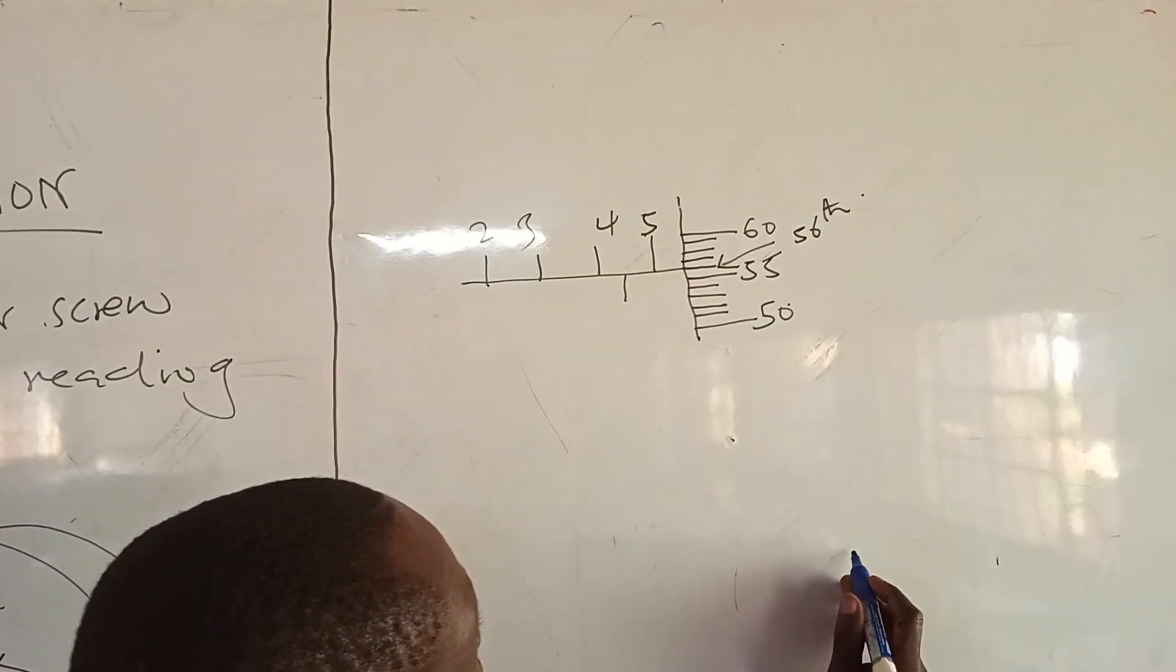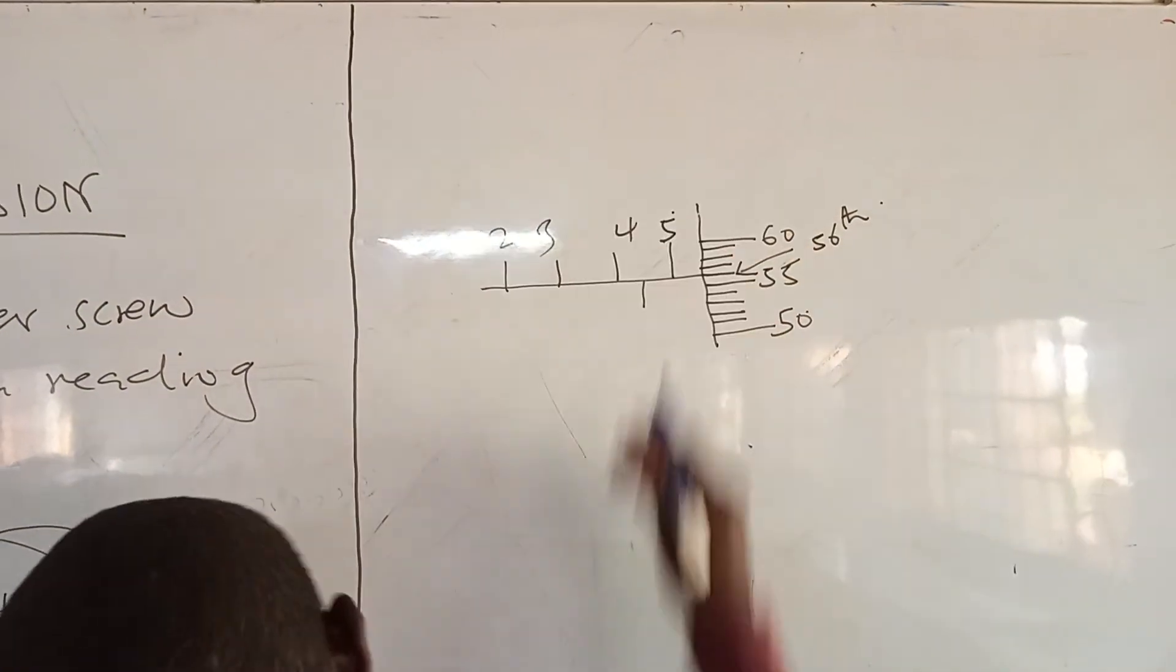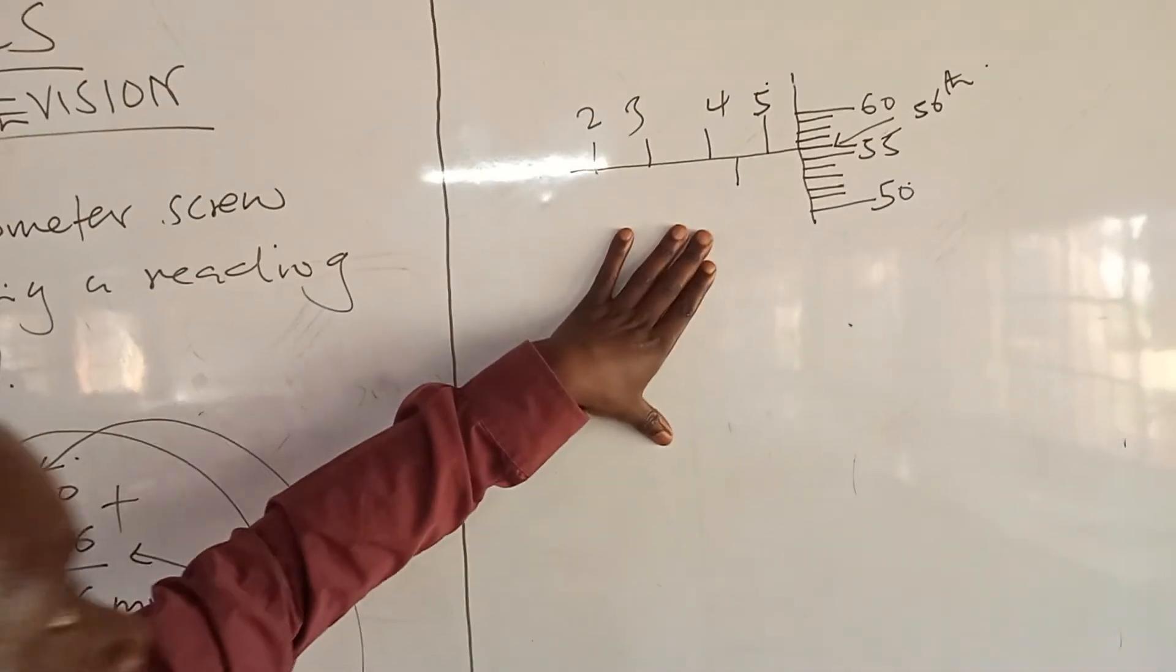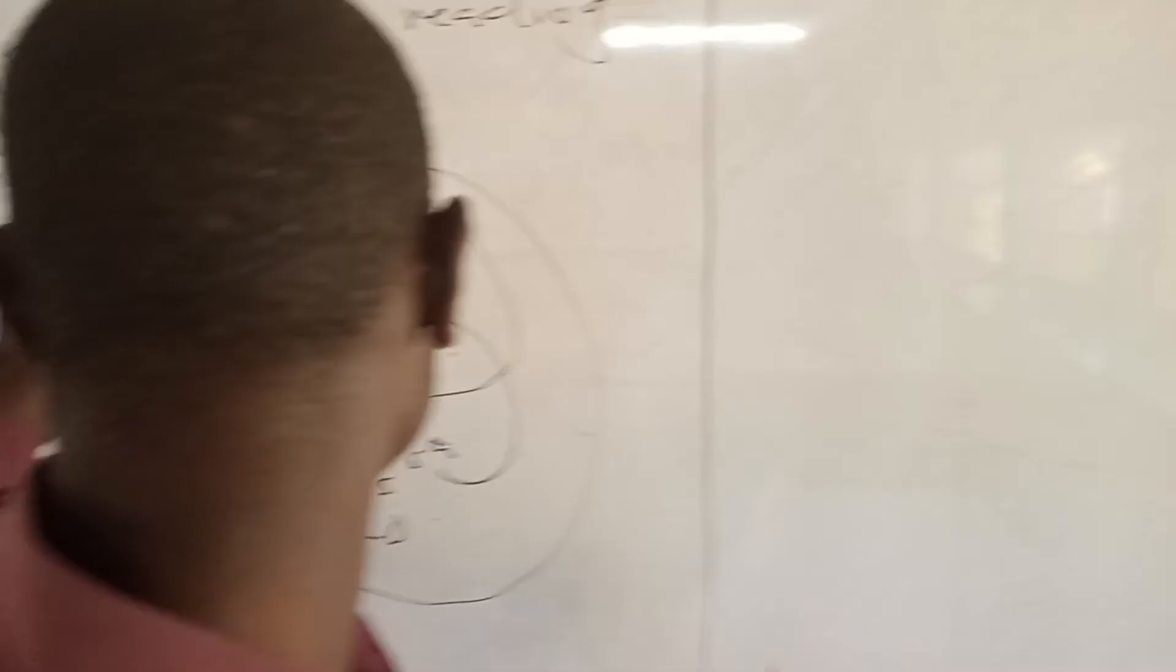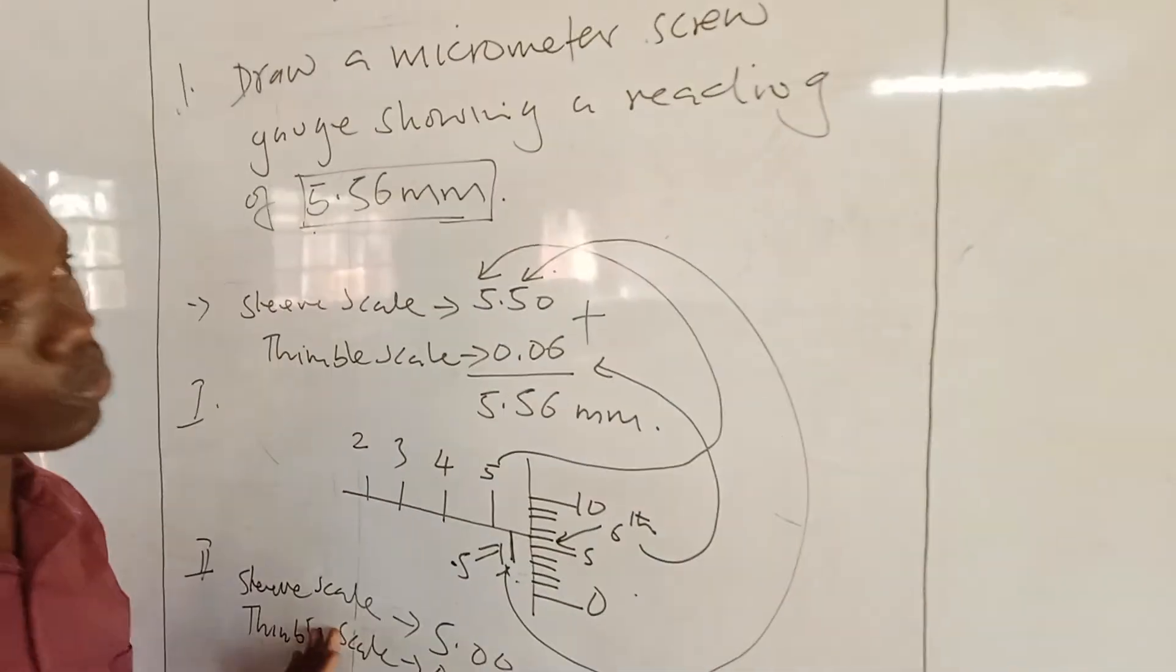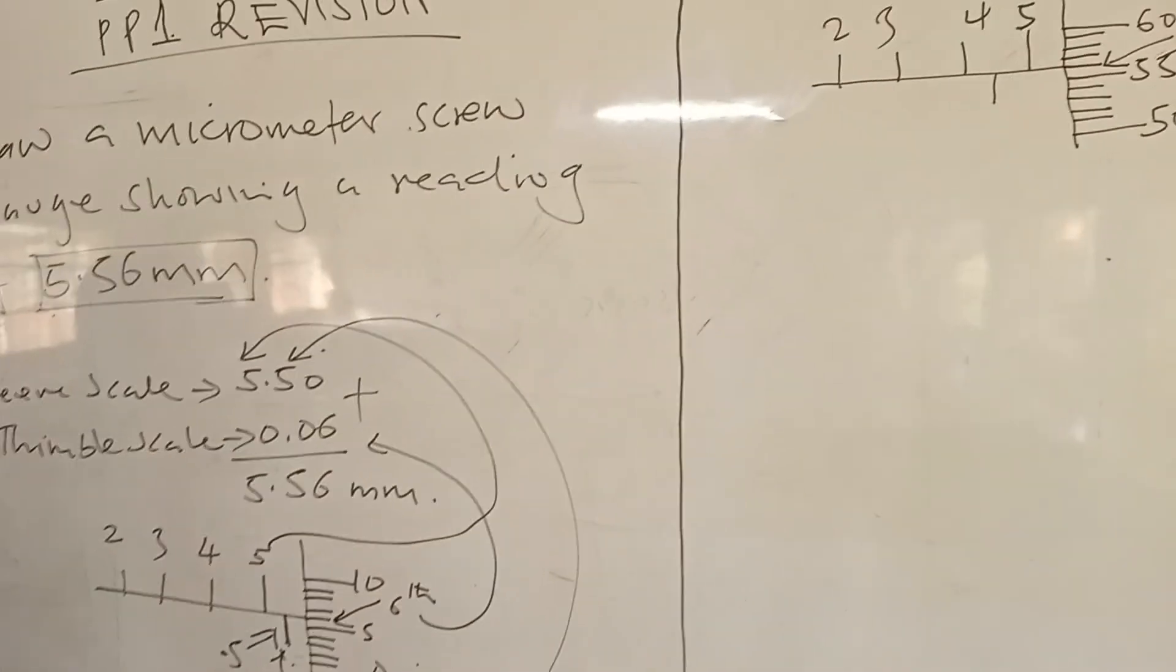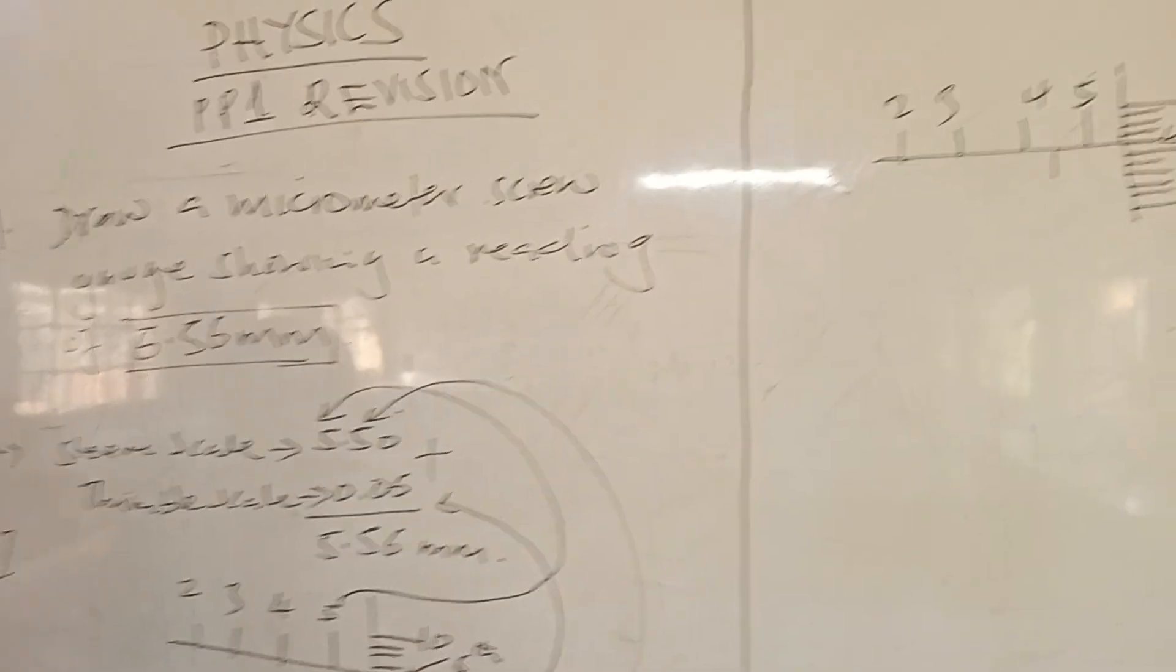And this one is going to be 5.0, so this is my reading. So we have both part one and part two. Any of these two answers are still correct. I think at that point we can go to the next question.